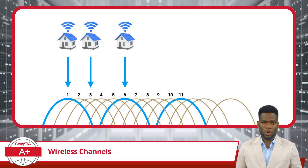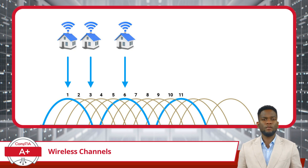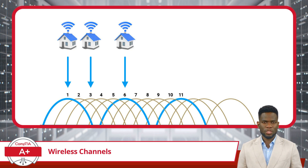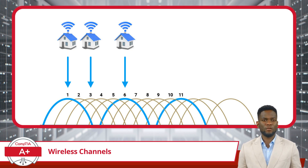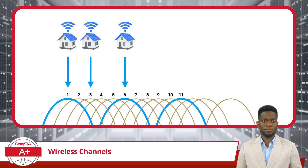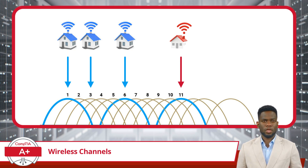Additionally, in environments with multiple nearby wireless networks, it's important for network administrators to survey the Wi-Fi spectrum and select channels that have the least amount of interference from neighboring networks. This proactive approach can help mitigate performance issues caused by channel congestion and ensure optimal wireless connectivity for users. Using the image behind me, we see three existing networks using channels 1, 3, and 6 respectively. What channel should we select for our wireless network? In this scenario, choosing channel 11 prevents any overlap with neighboring networks operating on channels 1, 3, and 6.